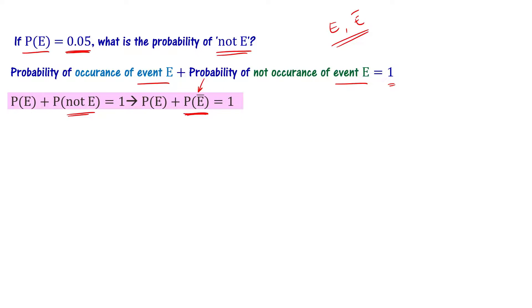Let's substitute. 0.05 + P(not E) = 1. If we transpose 0.05 to the other side, P(not E) equals 1 - 0.05.